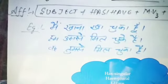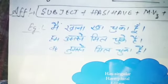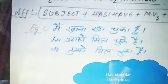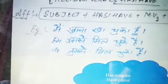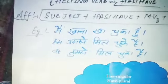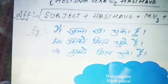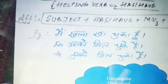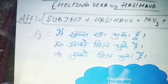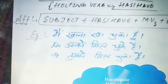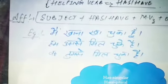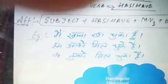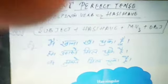For example: 'I have eaten food.' The verb 'eat' takes its third form 'eaten', so it becomes: I have eaten the food. Second example: 'We have met him.' Third example: 'He has met you.' These are examples of Present Perfect Tense in affirmative sentences.